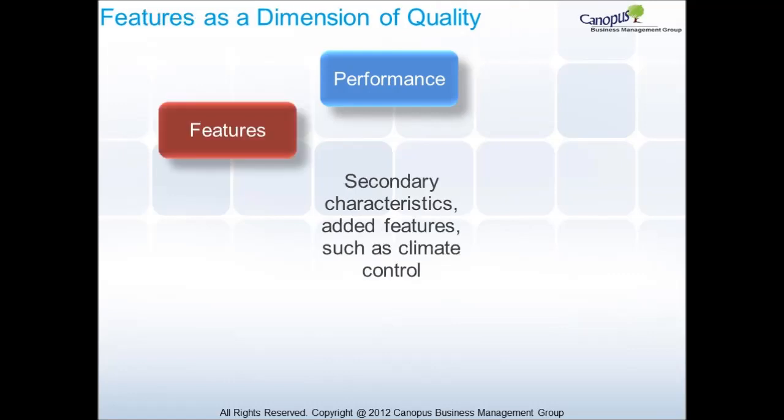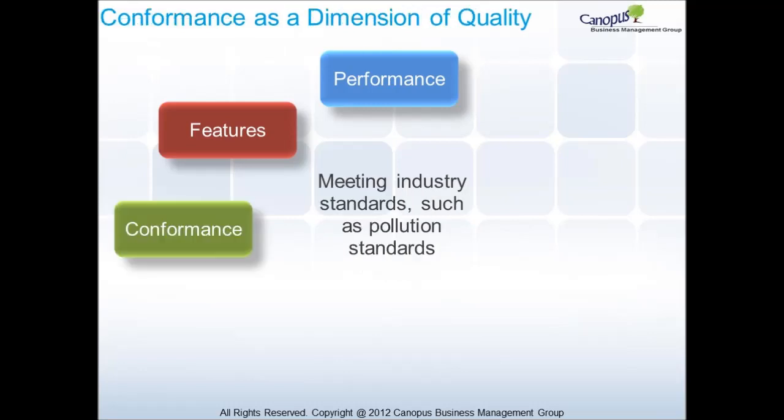When you consider features as a dimension of quality, it includes secondary characteristics or added features, such as climate control. When you consider conformance as a dimension of quality, it includes meeting industry standards, such as pollution standards.